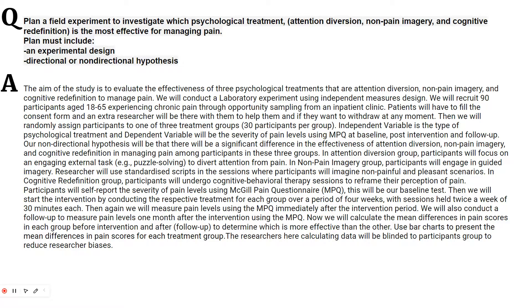You can write it down like this: we will conduct a lab experiment using an independent measures design. We will recruit 90 participants aged 18 to 65 experiencing chronic pain through opportunity sampling from an inpatient clinic. Mentioning age is a good thing for generalizability. Patients will have to fill in a consent form — see, the ethical guideline is put here as well.